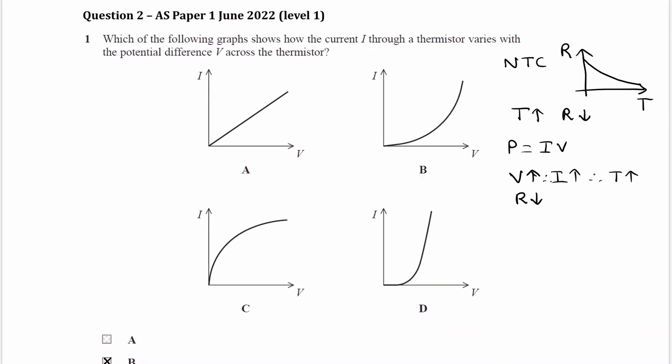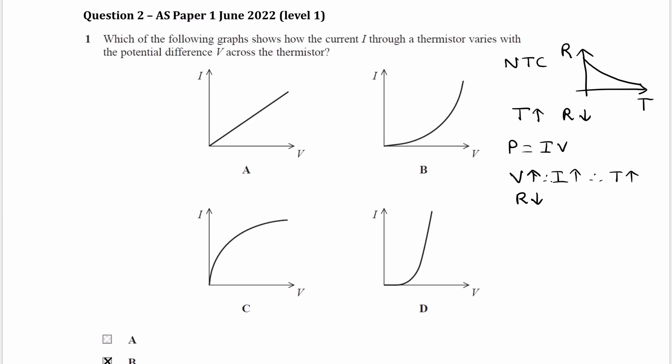And we can think about that as the current and voltage increase, the temperature increases, the resistance falls and therefore we're getting higher yield in current for the same yield in voltage.